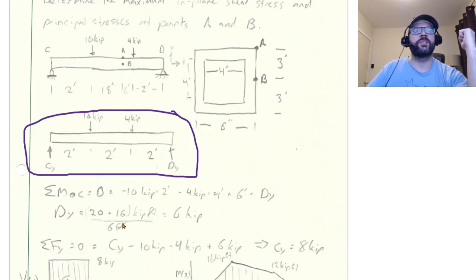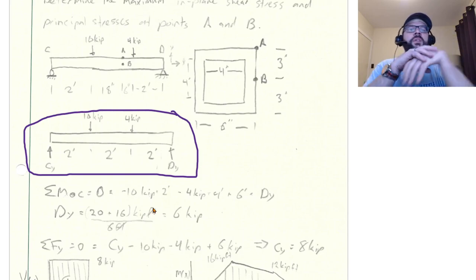So taking a moment about C, that's equal to zero. So negative 10 kips times two feet minus another four kips times four feet plus six feet times dy is equal to zero. dy is equal to six kips.